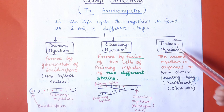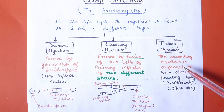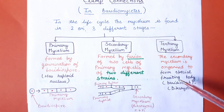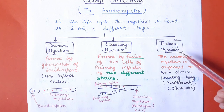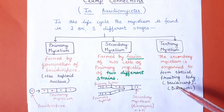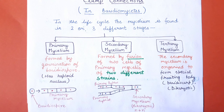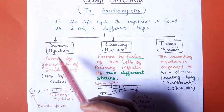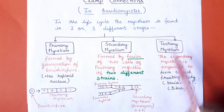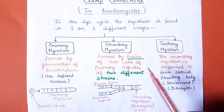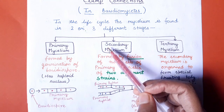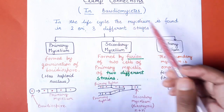Now let's talk about tertiary mycelium. Secondary mycelium is sometimes organized into a special fruiting body, and in that condition the term tertiary mycelium is used. The most important term for understanding clamp connections is secondary mycelium.